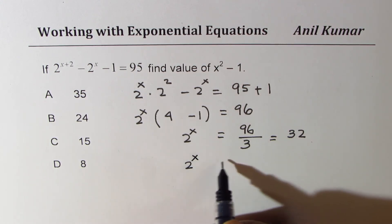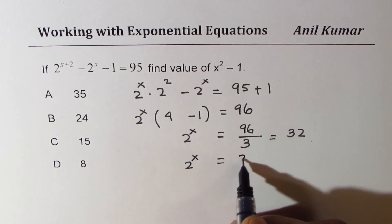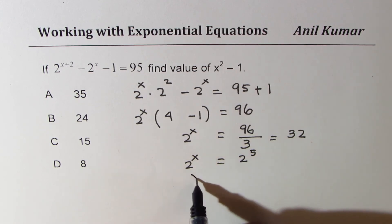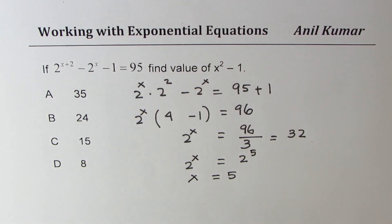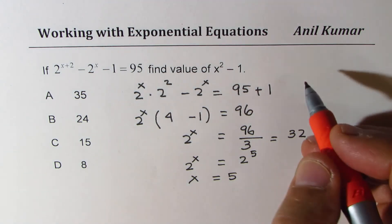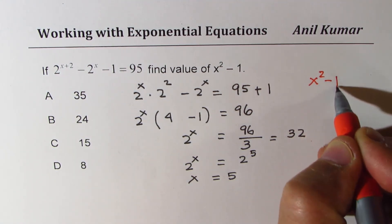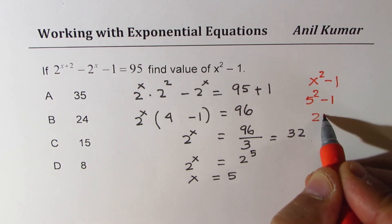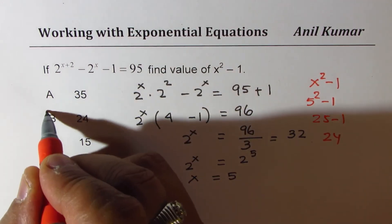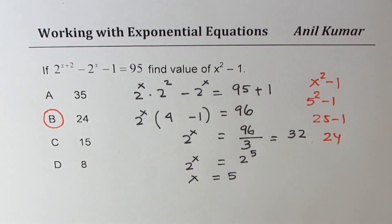Now, we could write 2 to the power of x as equals to 32 is 2 to the power of 5. And so we know x is equal to 5. What you need to find is x square minus 1. So that is 5 square minus 1, which is 25 minus 1 or 24. Option B is the right option.